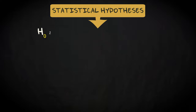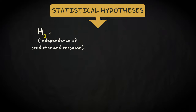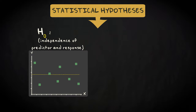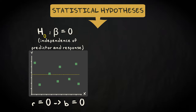We need a null hypothesis that expresses absence of any relation, or independence, between the predictor and the response variable in the population. If the predictor and response variable are independent, then the slope of the regression equation will be zero. So we test for independence by assuming the population regression coefficient beta is zero.